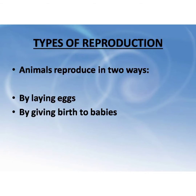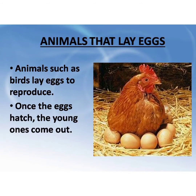Types of Reproduction: Animals reproduce in two ways — by laying eggs, and by giving birth to babies.